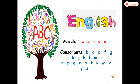Children, in English some of the alphabets are called vowels and the rest of the alphabets are called consonants. For example, A, E, I, O, and U are called vowels, whereas all the other alphabets of the English language are called consonants.